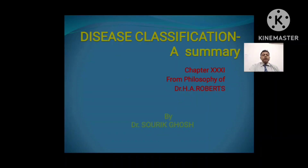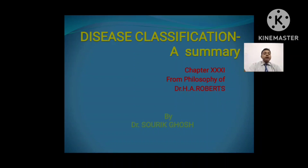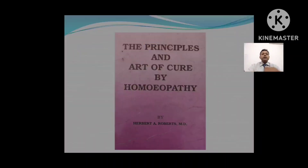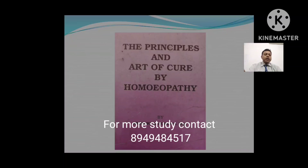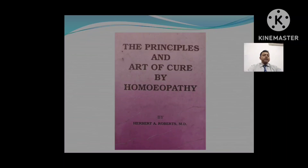Hello everybody. Today we are going to discuss chapter number 31 from Dr. Roberts' philosophy, and this chapter is 'Disease Classification as Summary.' Dr. H. Roberts has described about the three miasms — Psora, Sycosis, and Syphilis — from chapter number 22 to chapter number 30 in this book, 'The Principles and Art of Cure by Homeopathy.' I am Dr. Saurik Ghosh, associate professor in Organon of Medicine from Jaipur, Rajasthan, India. So let us start about the disease classification.